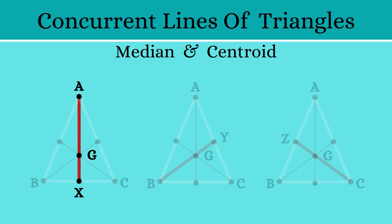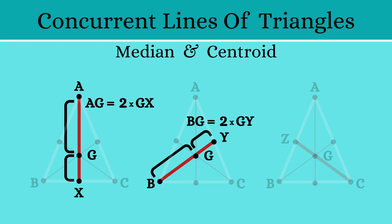Consider the median AX. The centroid G will divide this median in the ratio 2 is to 1. In simple words, AG is twice the length of GX. In the same way, BG is twice the length of GY, and CG is twice the length of GZ.